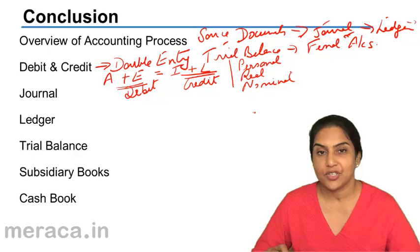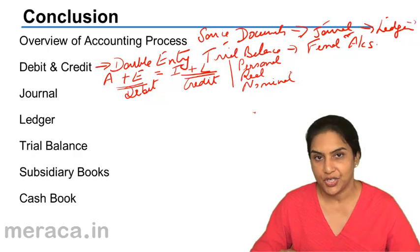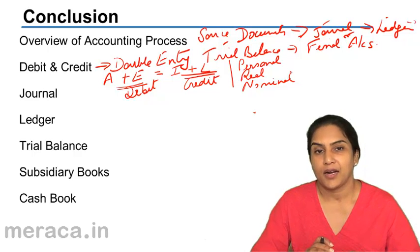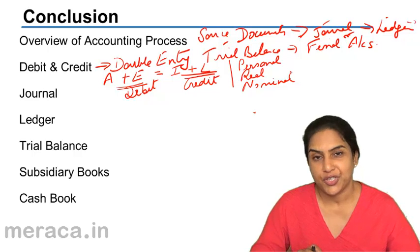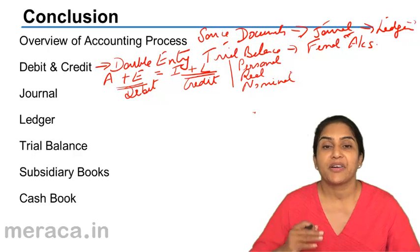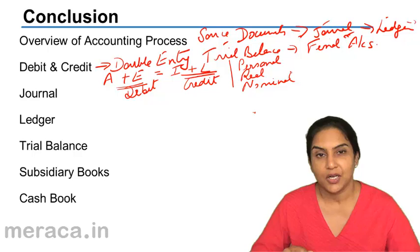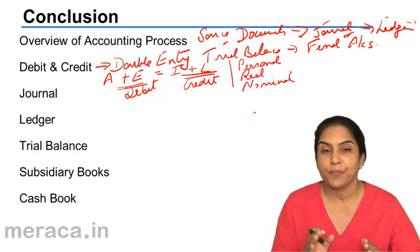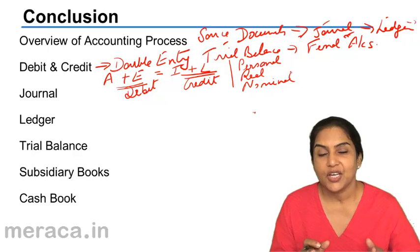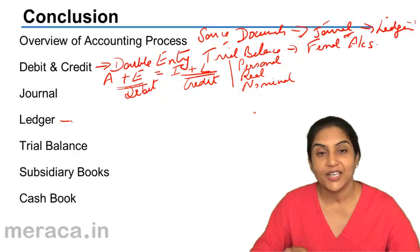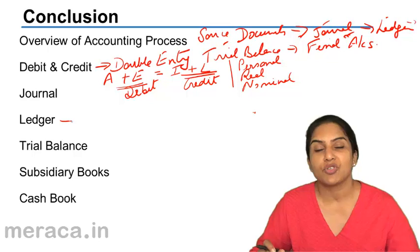Since transactions are recorded in a chronological order in the journal, it may be difficult to know the total of any particular kind of transaction. For example, if we wanted to know the total purchases for a period, we would have to go through several pages of a journal before we can add up to know what is the total of the purchases. These headings had to be arranged in a more analytical manner and that is what the ledger does. What is a ledger? Ledger is a book in which all accounts are kept.